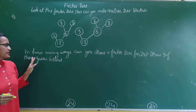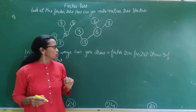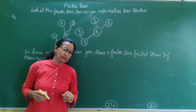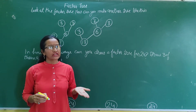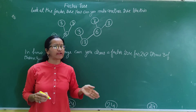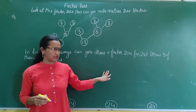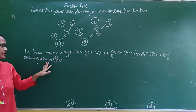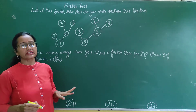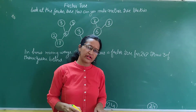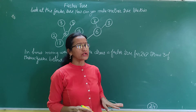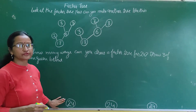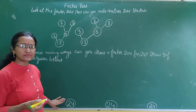Now next, in how many ways can you draw a factor tree for 24? So let us start. Here is 24. Now break 24. In which table does 24 come?